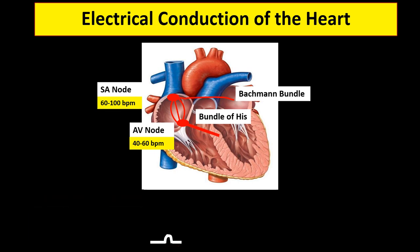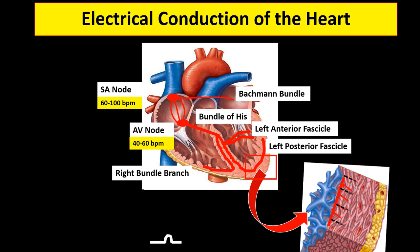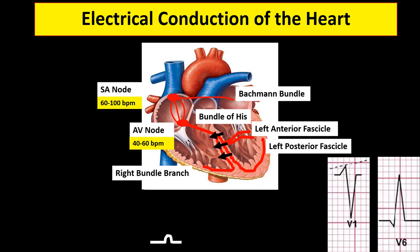The bundle of His bifurcates into two main branches: the right bundle branch and the left bundle branch. The main left bundle bifurcates into two primary subdivisions, namely the left anterior fascicle and the left posterior fascicle. From the right bundle branch and left anterior and posterior fascicles, depolarization wave fronts travel to the Purkinje fibers before spreading to the ventricular wall, depolarizing the wall from innermost to outermost ventricular layer — from endocardium to myocardium to epicardium. The interventricular septum depolarizes first from left to right direction, responsible for the first part of the QRS complex, before the entire ventricle depolarizes, which is responsible for the rest of the QRS complex. Therefore, the entire ventricular depolarization can be seen on surface ECG as the QRS complex.